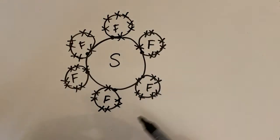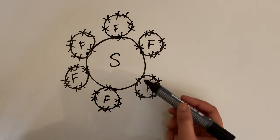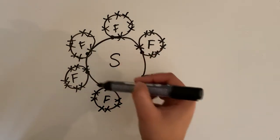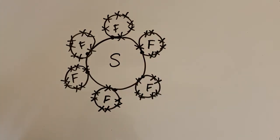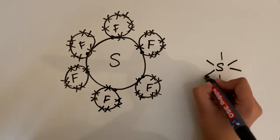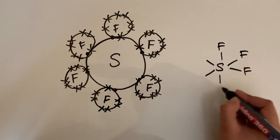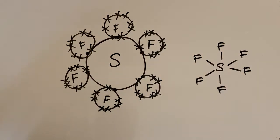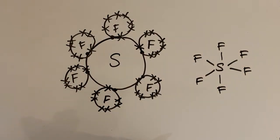Each fluorine now has eight outer electrons, but sulfur has 12 outer electrons in total — so sulfur has expanded its octet to 12. That's quite normal for non-metals in the third period. The displayed formula shows sulfur forming six bonds, one with each fluorine. The reason period-three non-metals can do this is because they have the 3d orbitals available to accommodate the extra electrons.